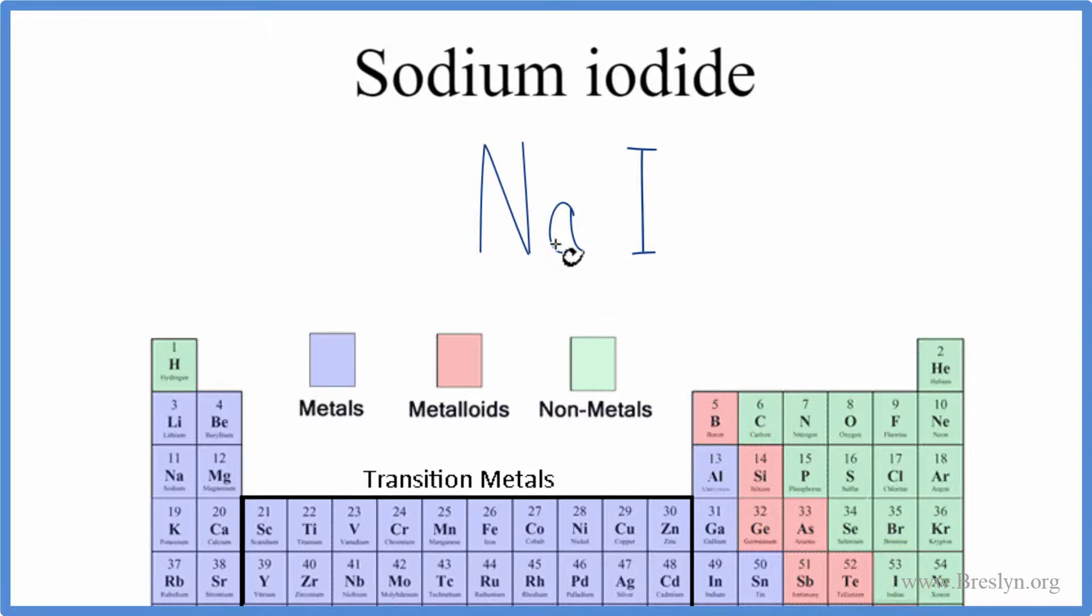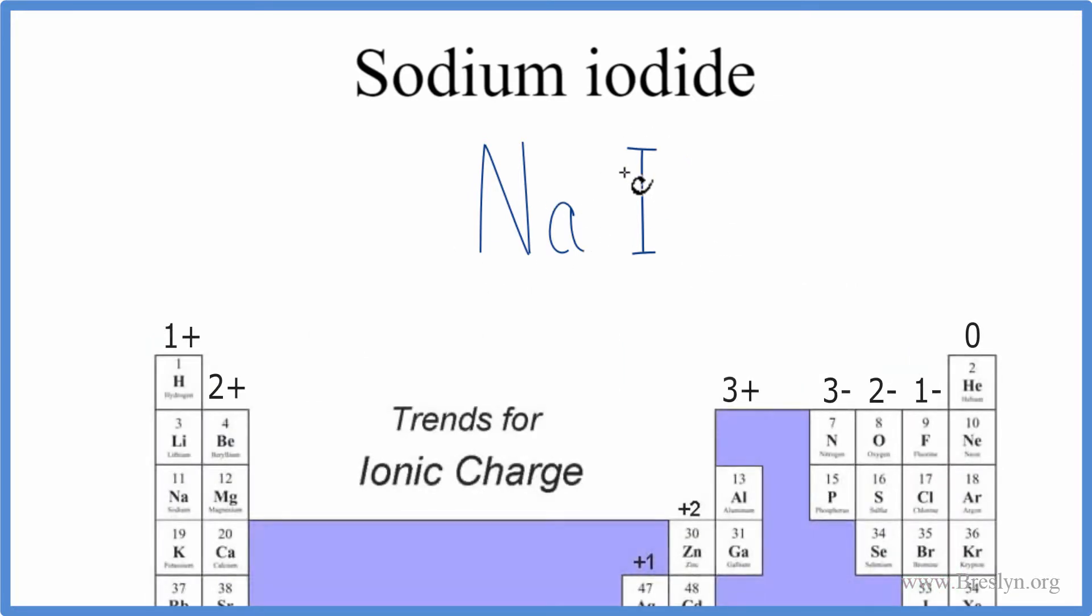Since sodium's a metal and iodine's a non-metal, we have what's called an ionic compound. And with ionic compounds, we need to take into account the ionic charge on each of these ions here.